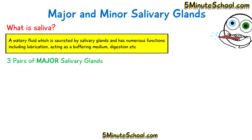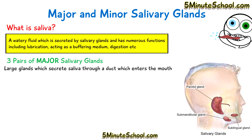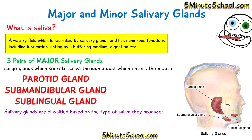There are three pairs of major salivary glands which are large glands that secrete saliva through a duct in the mouth. Those major salivary glands are the parotid gland, the submandibular gland, and the sublingual gland.